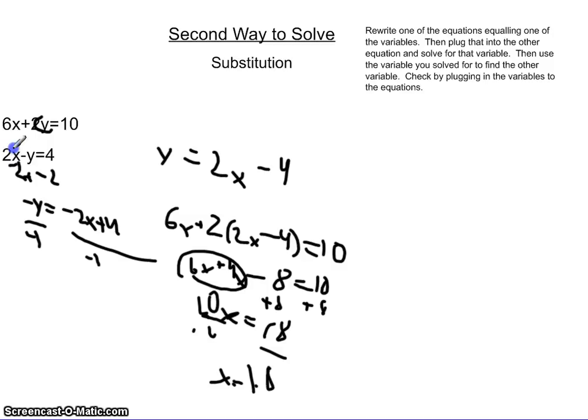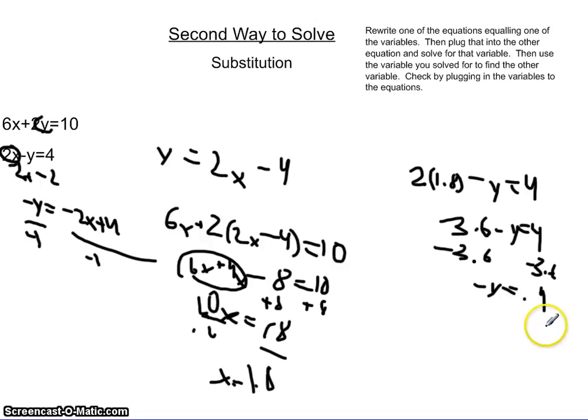So it's 2 times 1.8 minus y equals 4. Then we subtract the 3.6 from both sides making it negative y equals 0.4. Then we divide by negative 1 on both sides making y equal negative 0.4.